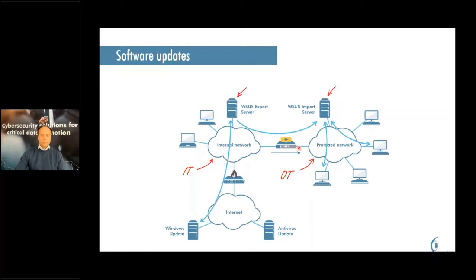There has to be a qualification or testing process in place for sorting out those packages that can and should be installed in OT. The operator selects those approved packages, the diode collects them and pushes them into OT to the update server located there. The OT server verifies that the packages are correctly signed and the packages are now available in OT for systems to be updated. The diode points inward toward OT, thereby preventing any attempts to communicate out from OT. For example, a SolarWinds-type attack would have had much less consequences with this setup, since malware would not have had any possibility to communicate with its home server or send out sensitive information.